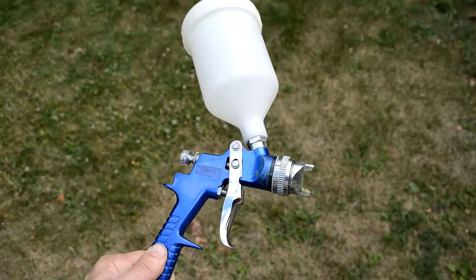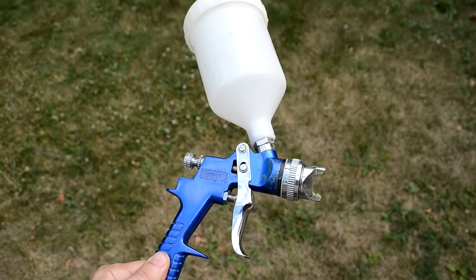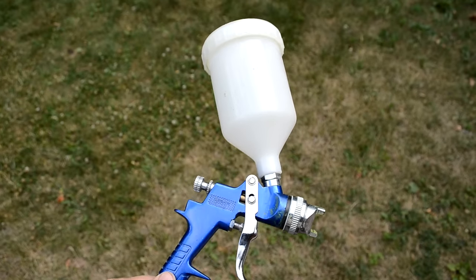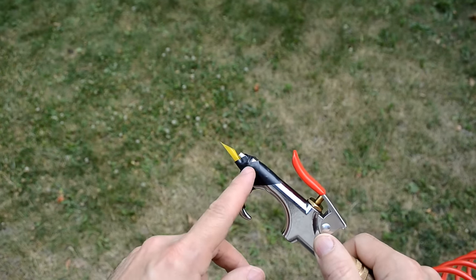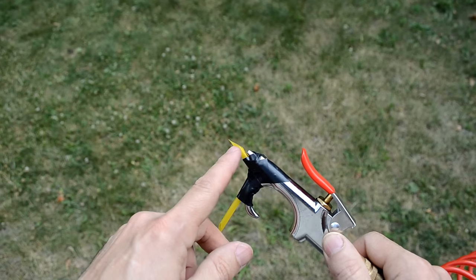Spray guns like this also rely on the Venturi effect to mix the liquid but I've actually built a very primitive sort of spray gun just by taping a bendy straw to the nozzle. So, the nozzle's here and here it's gonna pull it off.